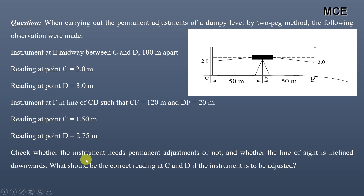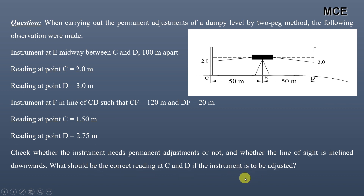We have to check whether the instrument needs permanent adjustment, and whether the line of sight is inclined downwards. We also have to find what the correct reading at C and D should be if the instrument is to be adjusted.